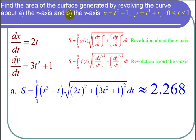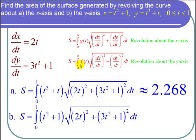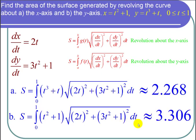Now for part b — finding the surface area generated by revolving the curve around the y-axis. The surface area equals the integral from 0 to 1 of (t squared plus 1) times the square root of (2t) squared plus (3t squared plus 1) squared, dt. Putting that into a calculator gives a surface area of approximately 3.306.